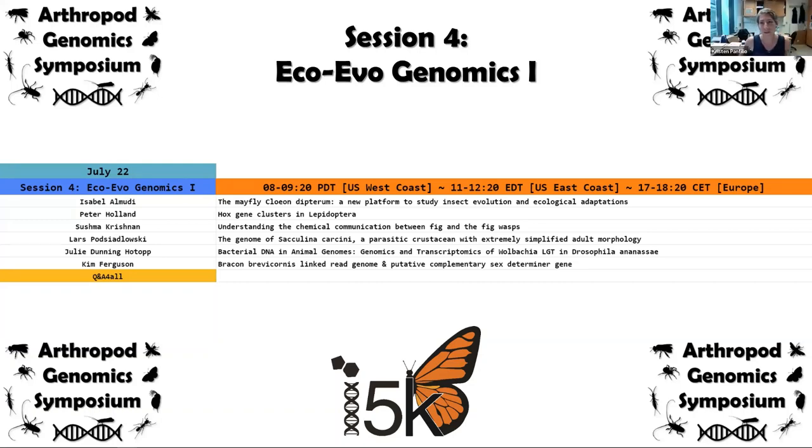Welcome everyone to session four, the first of two sessions on ecology and evolutionary genomics. We have really great taxonomic breadth in the upcoming talks — arthropods including crustaceans and others, not only insects. Thinking about a broader ecological perspective, we're also going to be spanning kingdoms, thinking about bacteria and others that constitute the larger ecosystem of individual species.